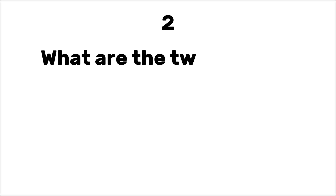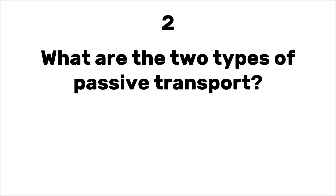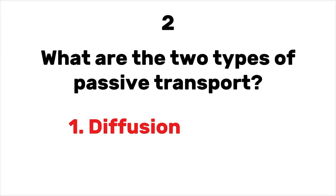Number 2. What are the two types of passive transport? Diffusion and osmosis.